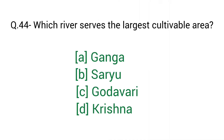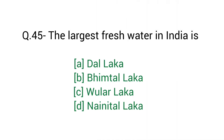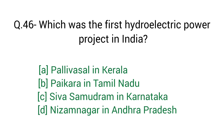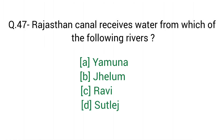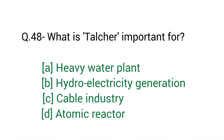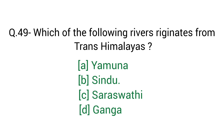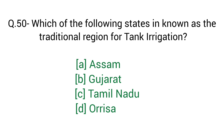Question number 44: Which river serves the largest cultivable area? Right answer option D: Ganga. Question number 45: The largest freshwater lake in India is — right answer option C: Wular lake. Question number 46: Which was the first hydraulic power project in India? Right answer option C: Sivasamudram in Karnataka. Question number 47: Rajasthan Canal receives water from which river? Right answer option D: Sutlej river. Question number 48: What is Trombay important for? Right answer option A: Heavy water plant. Question number 49: Which of the following rivers originates from Trans-Himalayas? Right answer option B: Sindhu. Question number 50: Which of the following states is known as the traditional region for tank irrigation? Right answer option C: Tamil Nadu.